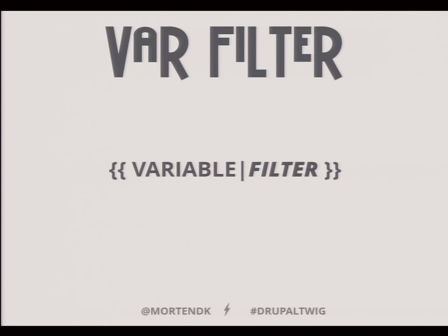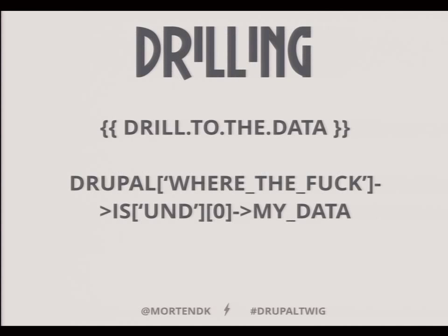Here's a variable — this is how you print it out. You can then add a filter on it to modify it. This is how we used to print Drupal stuff out — you know, looking for the data with und and zero because we don't want to give themers too much control. This is how we're going to do it now: you can drill in with a dot between each level to find the data you want.